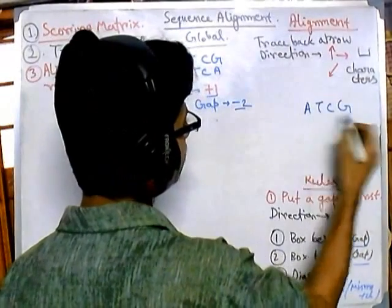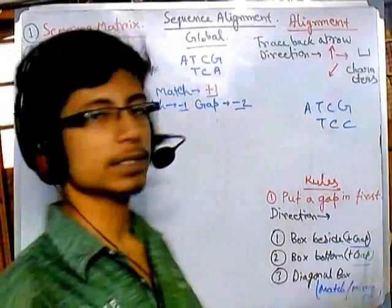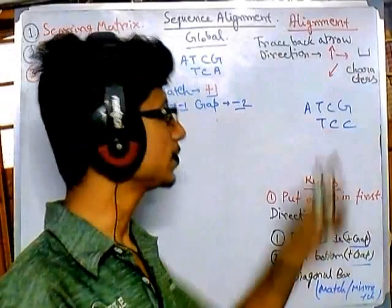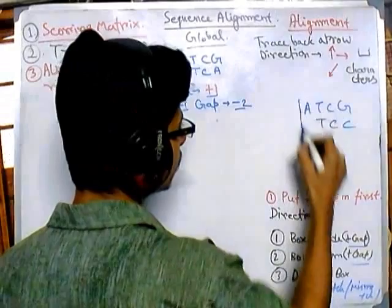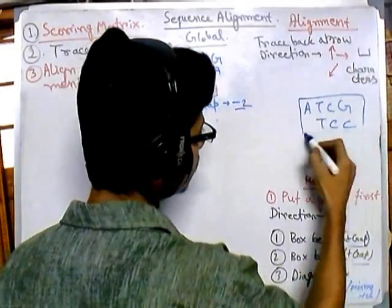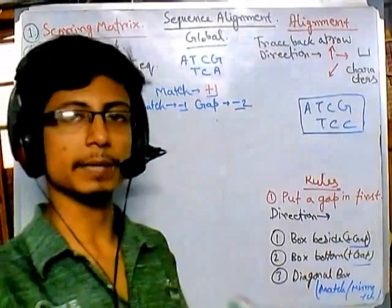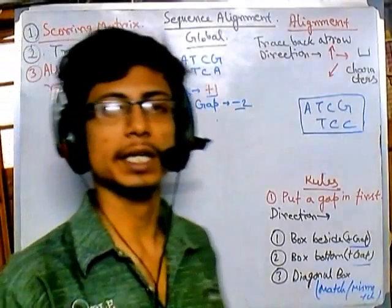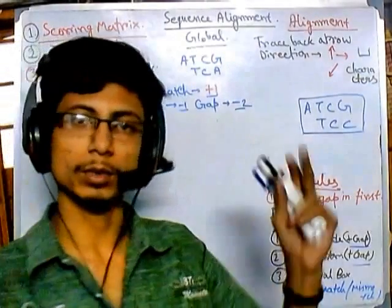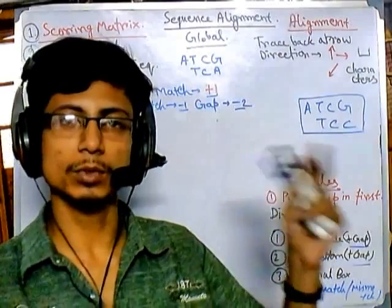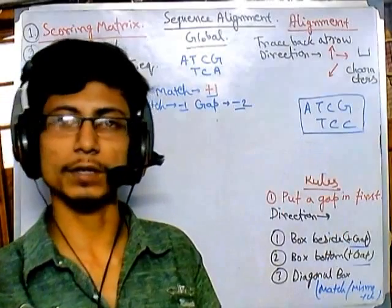Let's say we are going to align these two sequences: ATCG and TCC. We are trying to align them using local sequence alignment. Local sequence alignments deal with segments of our total gene, because if the sequence is too long we need to look for sequence homology in small segments of the gene.